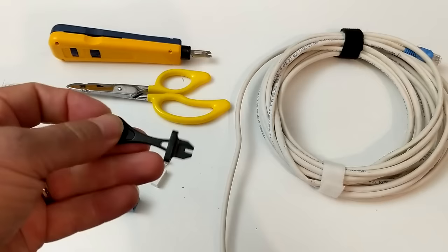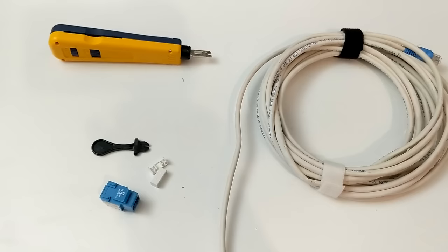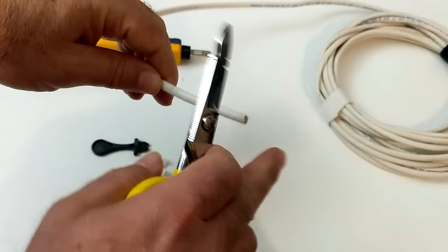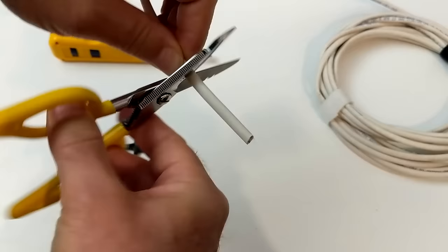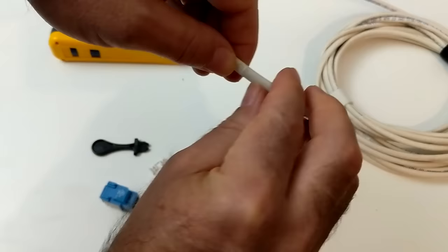To begin, the first thing we need to do is to strip back the jacket from the Cat 6 cable. The jacket is this plastic coating that is on the outside and inside reveals eight individual wires. I'm going to take my snips and lightly make a grazing action or scoring action on the outside of the jacket, and then break it open.